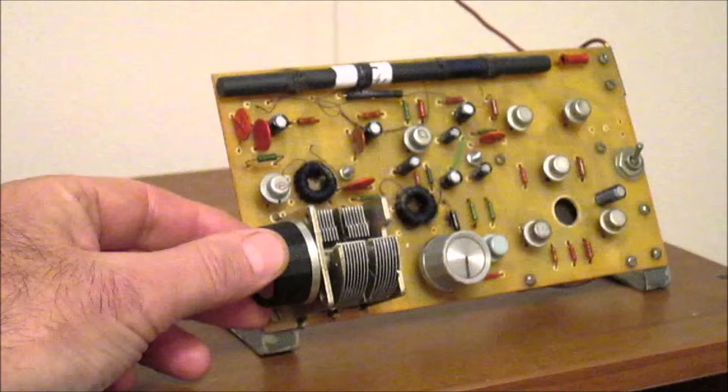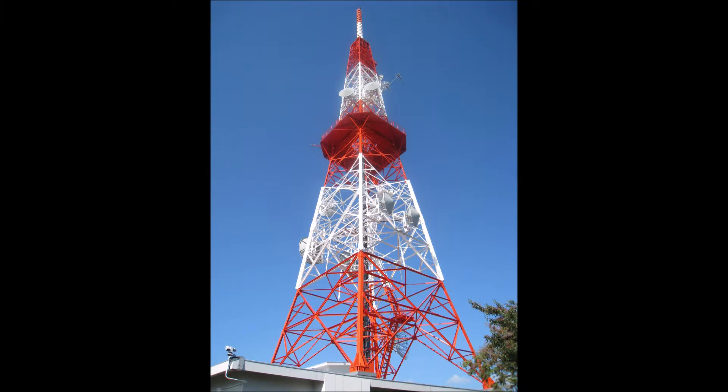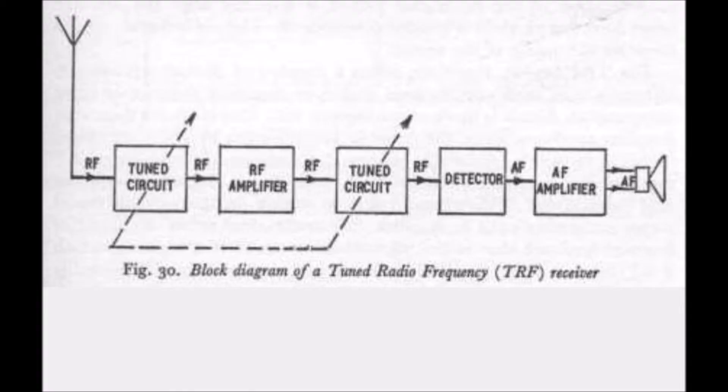But it cannot in any way boost the original signal. The tuned radio frequency TRF receiver, however, does just that, amplifies the incoming RF signal before it is passed on to the detector. A block diagram of such a circuit is shown in figure 30.